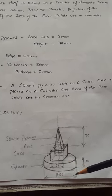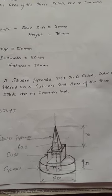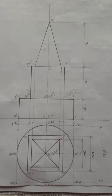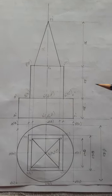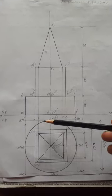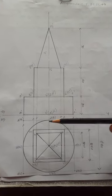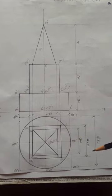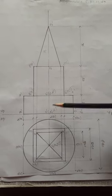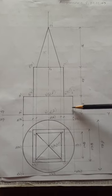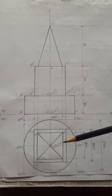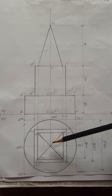We draw the orthographic projection of the combination of three solids, showing the top view and front view. First, draw the cylinder in the top view — it is a circular shape with diameter 80 mm. Projected into the vertical front view, the thickness is 30 mm and it looks as a rectangular shape.